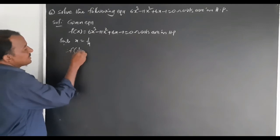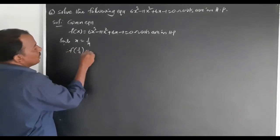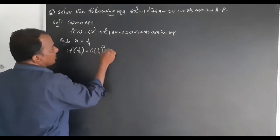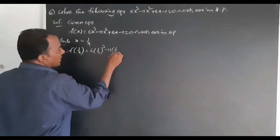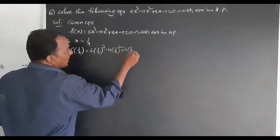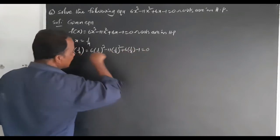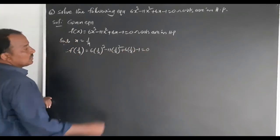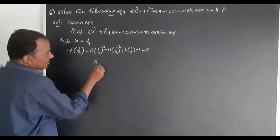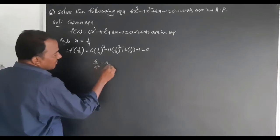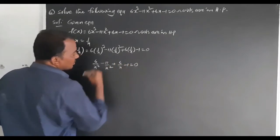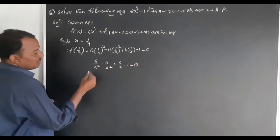f(1/x) equals 6 of (1/x) whole cube minus 11 into (1/x) whole square plus 6 into (1/x) minus 1 equals 0. Now simplify this.